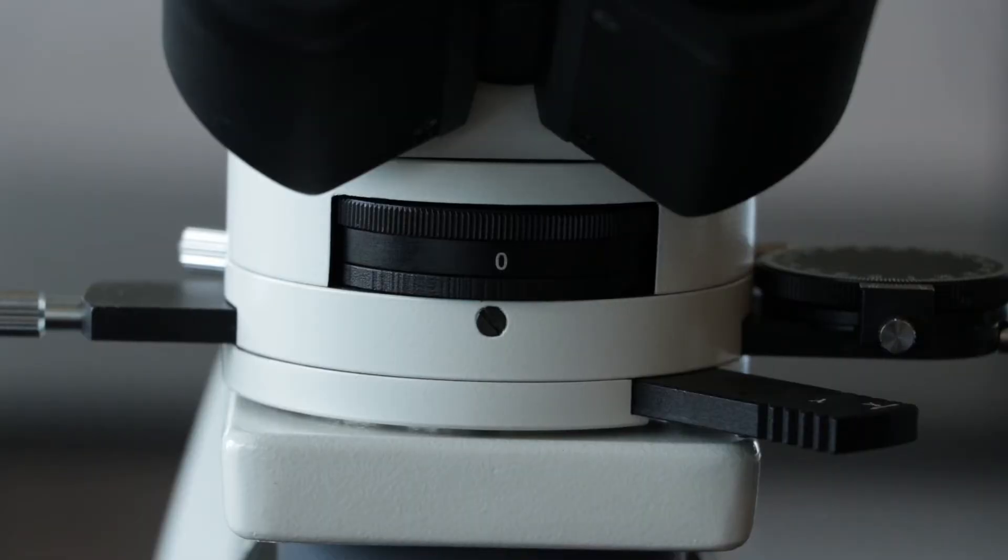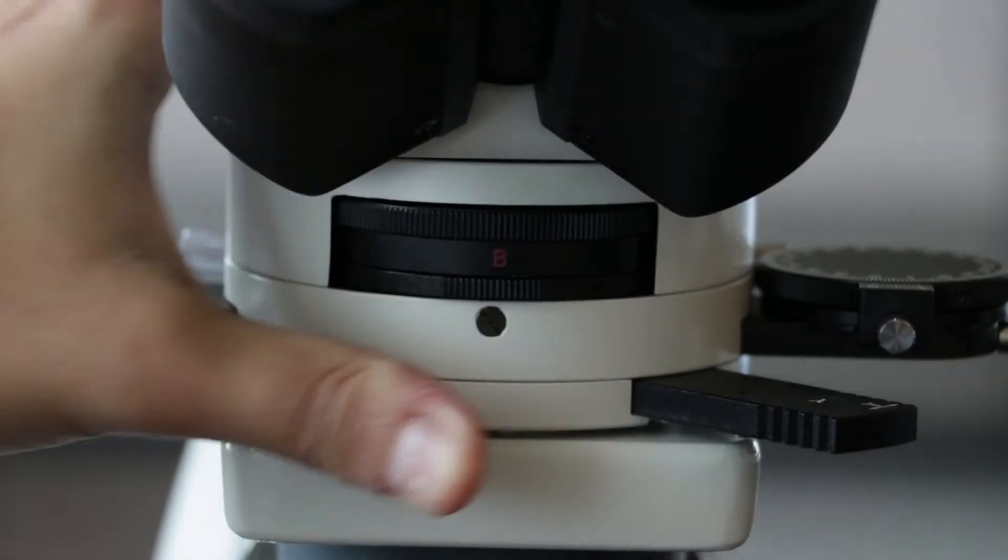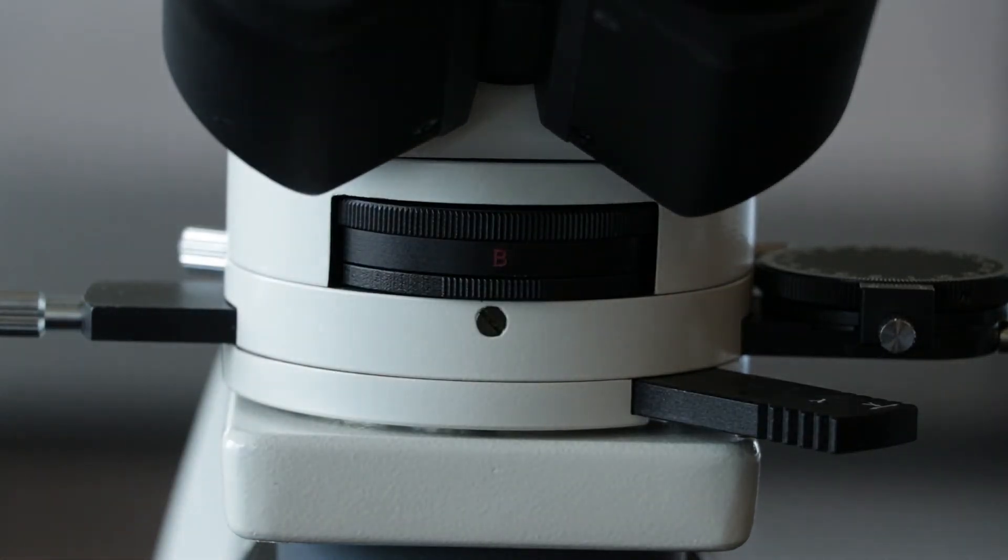The Bertrand lens ring is the black wheel above the accessory plate. This is normally set to zero if it's not needed.